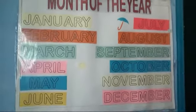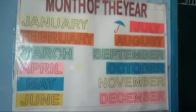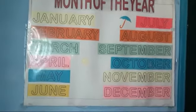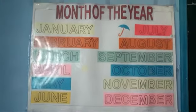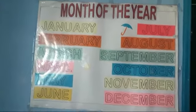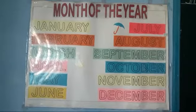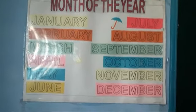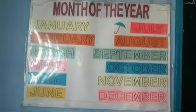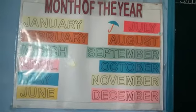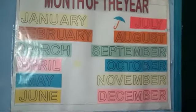How many months are there in a year, children? Twelve months. How many months are there in a year? Twelve months.